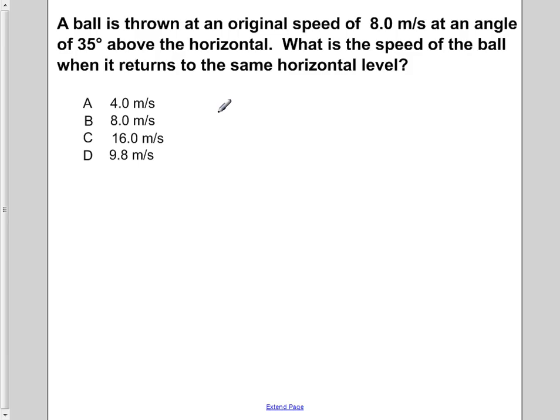A ball is thrown at an original speed of 8 meters per second at an angle of 35 degrees above the horizontal. What is the speed of the ball when it returns to the same horizontal level?